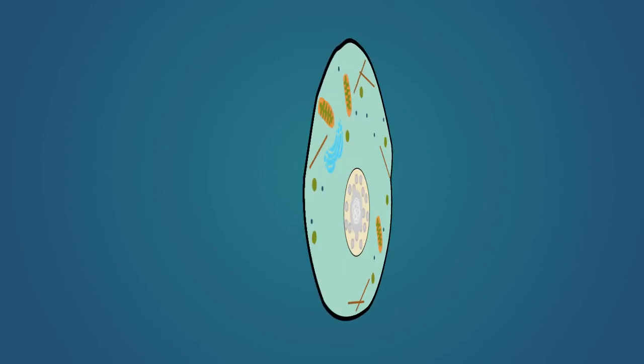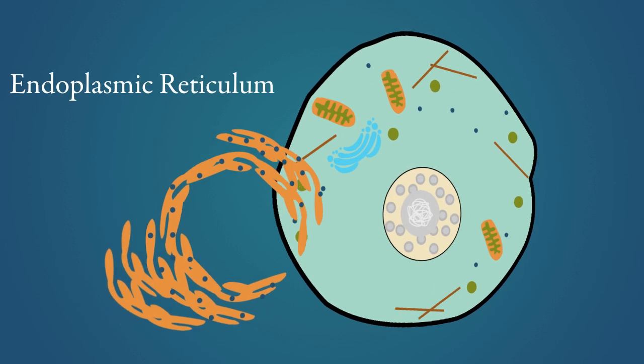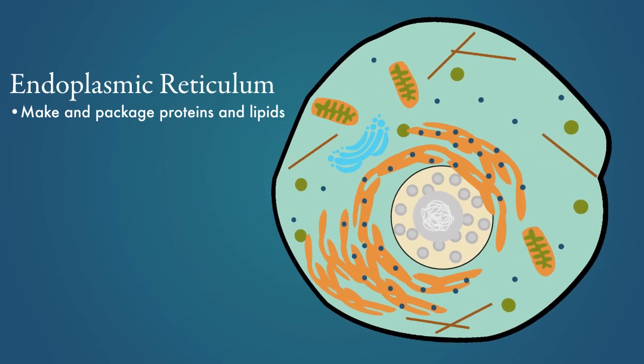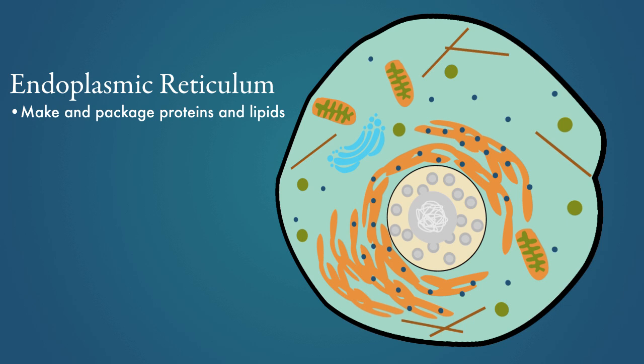Inside eukaryotic cells, an organelle called the endoplasmic reticulum is responsible for making and packaging proteins and lipids to send around the cell, much like the assembly line in a factory.